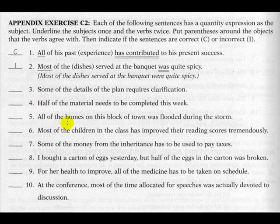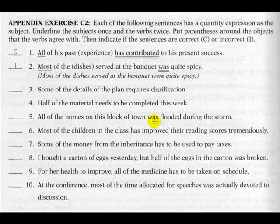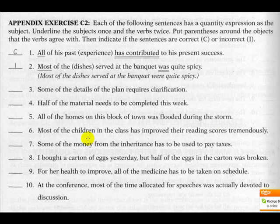Number five: 'All of the homes on this block of town was flooded during the storm.' All is the subject, homes is the object. Homes is plural but 'was' is singular — that is incorrect. It should be 'All of the homes on this block of town were flooded during the storm.' Substituting the pronoun: 'they were flooded.'